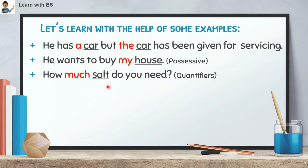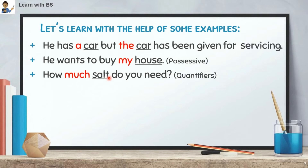Example 3: 'How much salt do you need?' Here, 'salt' is the noun. The word that comes before it is 'much'. So 'much' is a determiner. What type of determiner? It is a Quantifier, because it tells us about quantity.